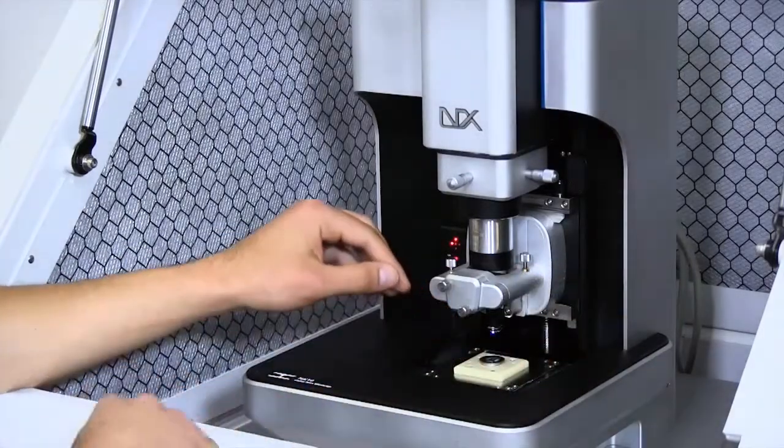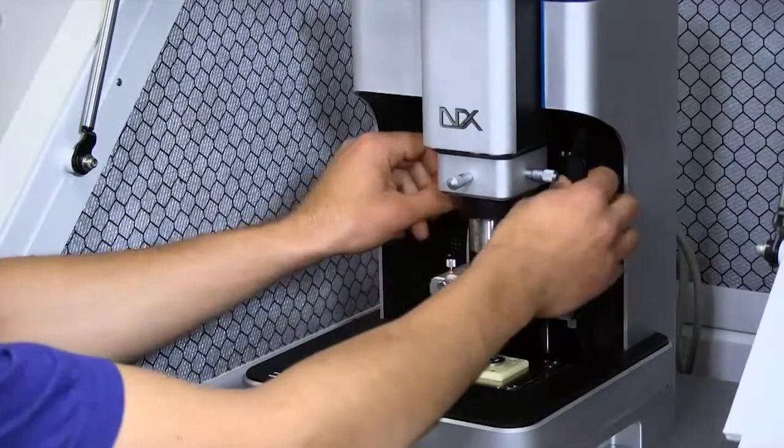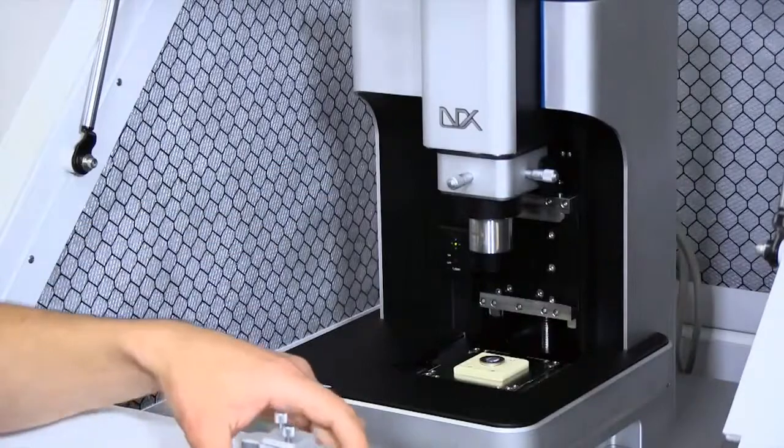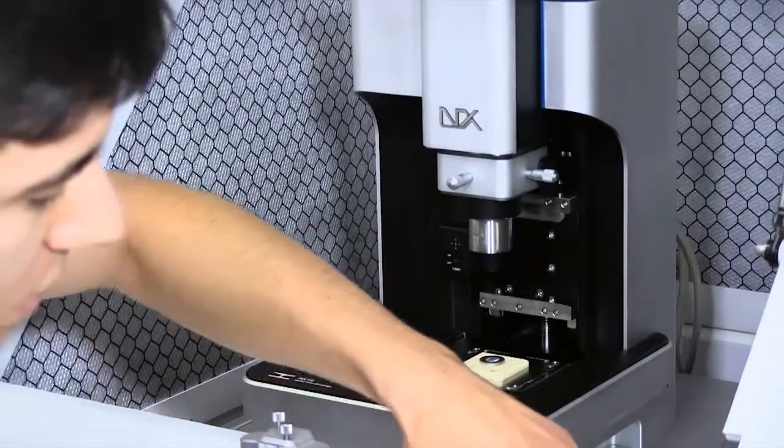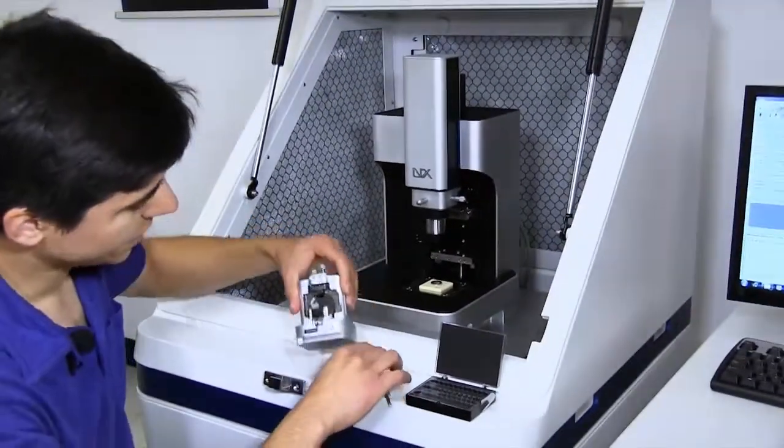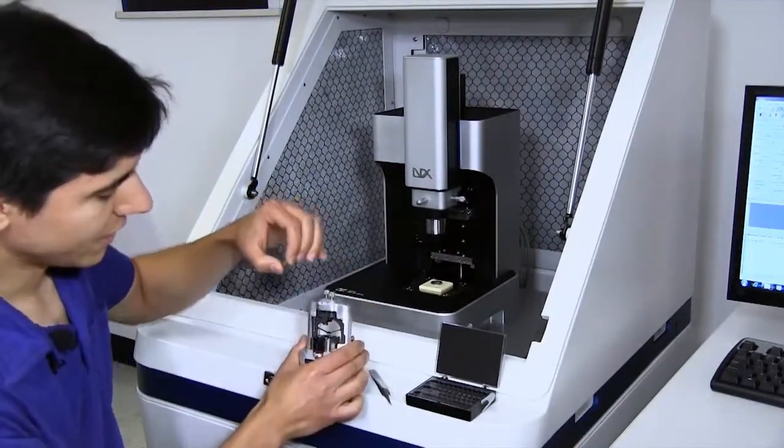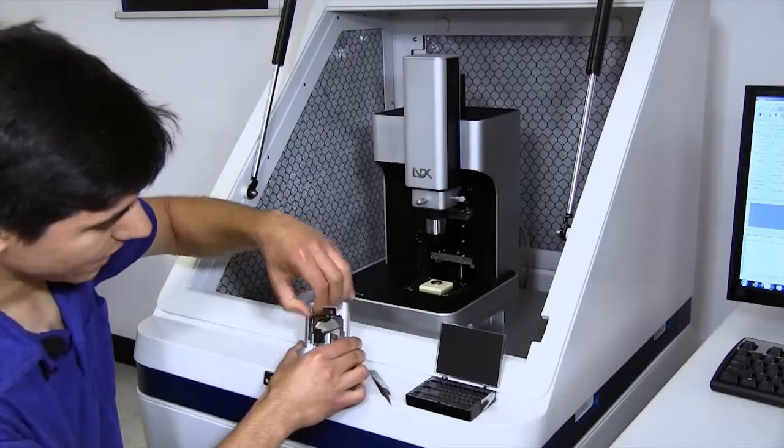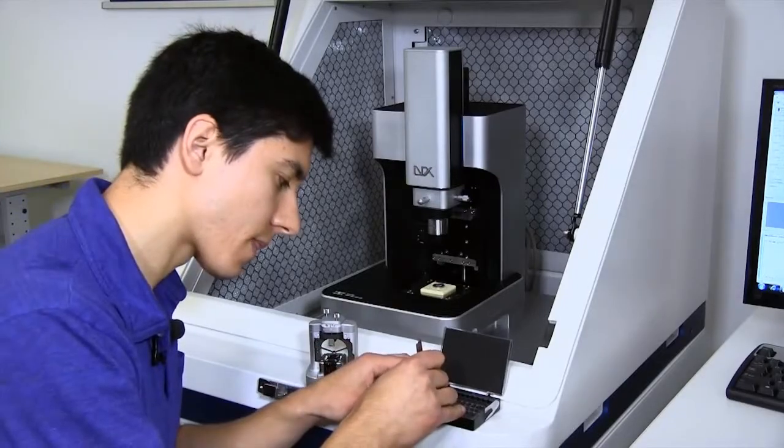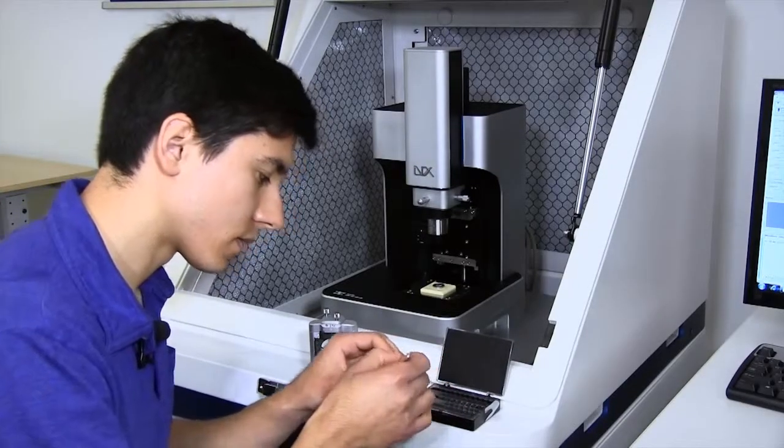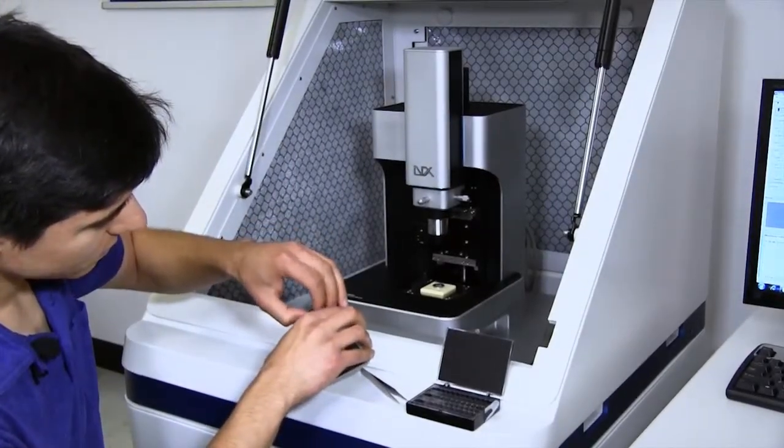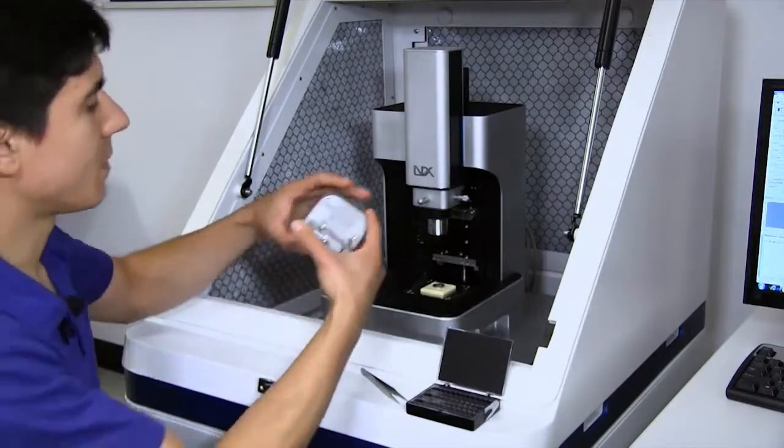And now let me change out the probe that we're going to be using to make this scan. To do that, we remove the AFM head. And the probes are attached to steel carriers, so they magnetically snap in and out of the head. So let me remove the one that was in there, and then snap in the new one, and then replace the head back on the microscope.